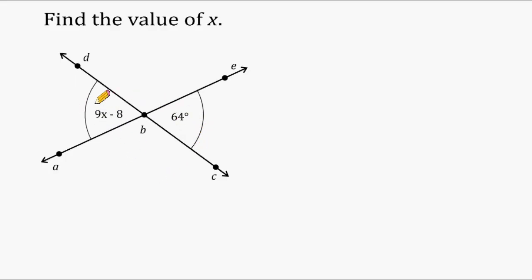So we could say that this expression right here, 9x minus 8, is equal to this angle measure on the other side, which is 64 degrees. So we know that this angle right here is 64 degrees, which means this angle right here must also be equal to 64 degrees.